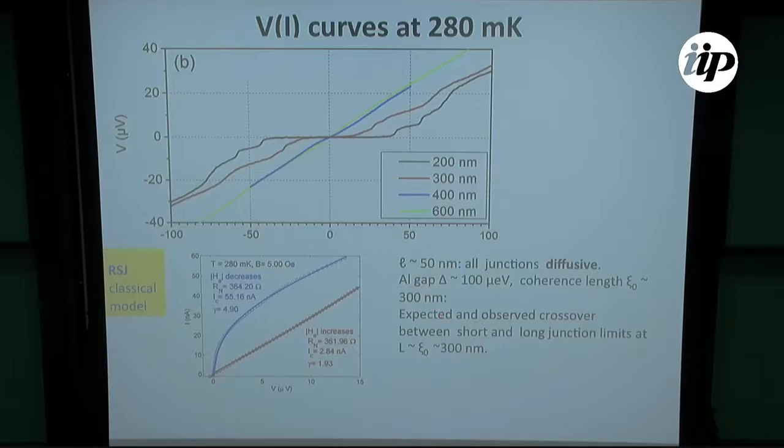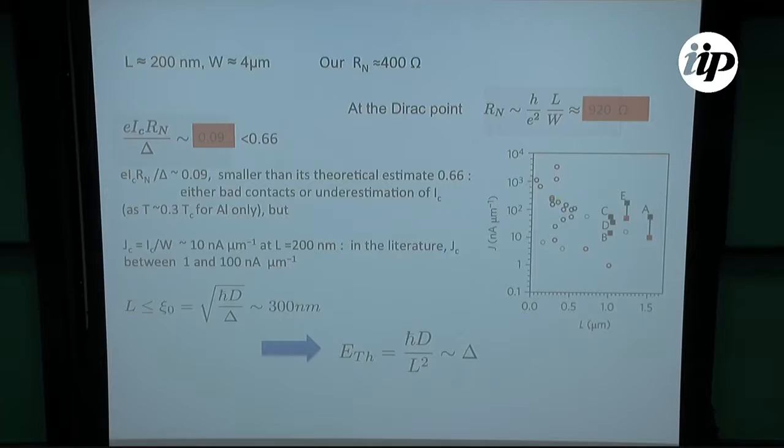This can also be seen when one deals with the ICRN over delta ratio, which turns out to be at least an order of magnitude less than what is expected. But this appears to be a feature that is common to most of these graphene junctions. It's probably due to the fact that the barrier is not so good between graphene and the contact.